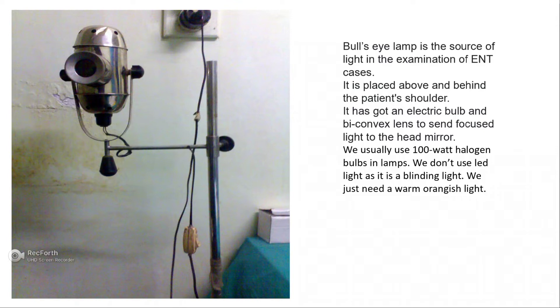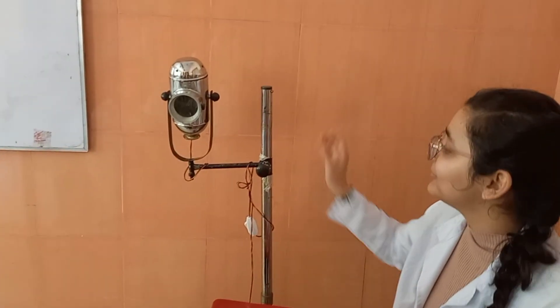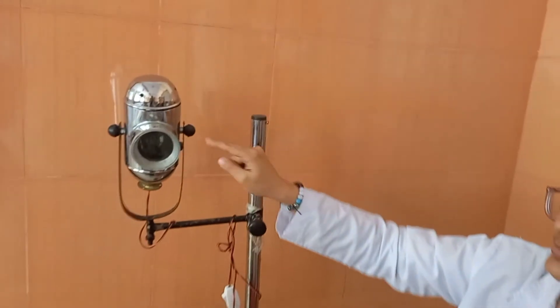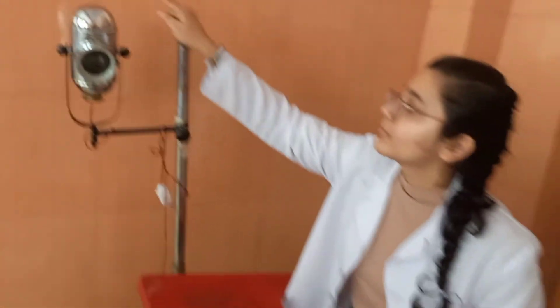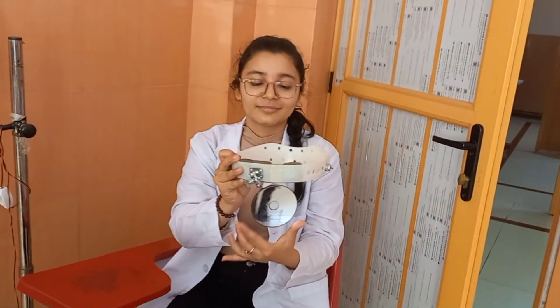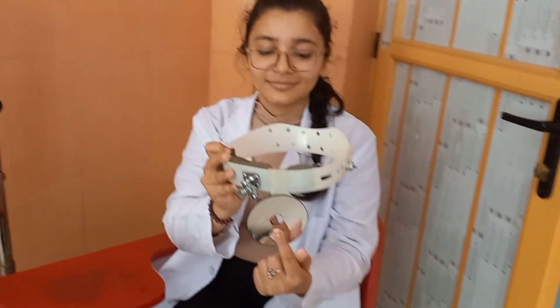That was a theoretical explanation of the instruments. Now you can watch the video where I explain how to use them. I'll be explaining only how to adjust and demonstrate in the practical. Here you can see the bull's eye lamp stand with the bulb valve and convex lens inside, and here is the headband with the concave mirror and a hole in the center, along with the hinge.